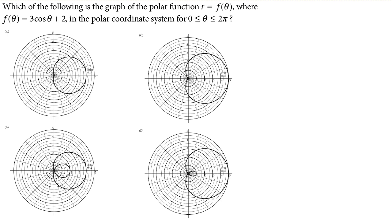We have a fun little problem about graphs of polar functions. Which of the following is the graph of the polar function r equals f of theta, where f of theta equals 3 cosine theta plus 2 in the polar coordinate system from 0 less than or equal to theta less than or equal to 2 pi.